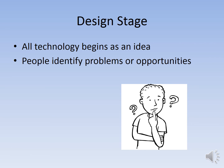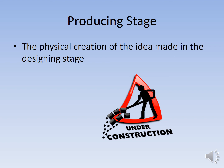In the design stage, all technology begins as an idea — it begins as a thought. People identify problems or opportunities, and throughout this stage, people begin planning what they're going to do, how they're going to do it, and what they're going to use to create it. All of the planning goes in the design stage. Then in the producing stage, it is the actual physical creation of the idea that was made in the design stage. Once you've planned something, you create it — that actual physical process of creating it is in the producing stage.